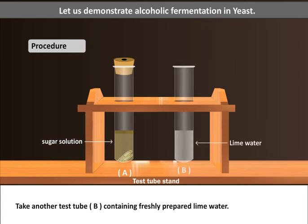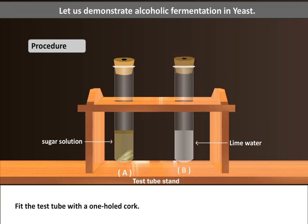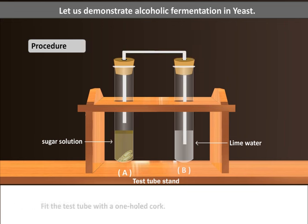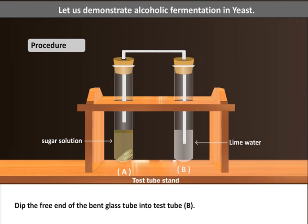Take another test tube containing freshly prepared lime water. Fit the test tube with a one-hole cork. Now fit test tube A's cork with a bent glass tube. Dip the free end of the bent glass tube into the second test tube.